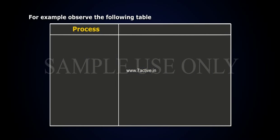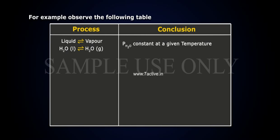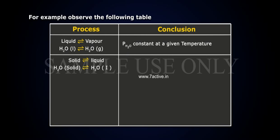Process and Conclusion. Liquid in equilibrium with vapor: H2O liquid in equilibrium with H2O gas. PH2O constant at a given temperature. Solid in equilibrium with H2O liquid: melting point is fixed at constant pressure.